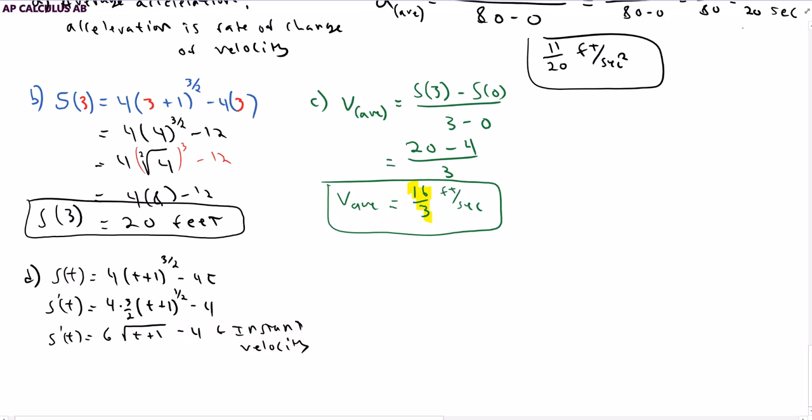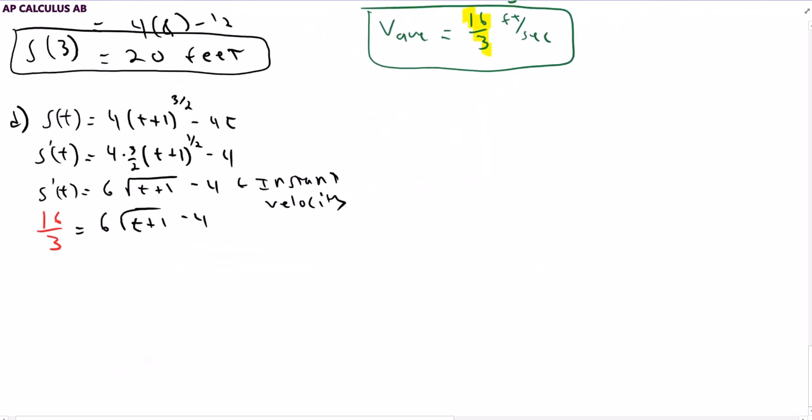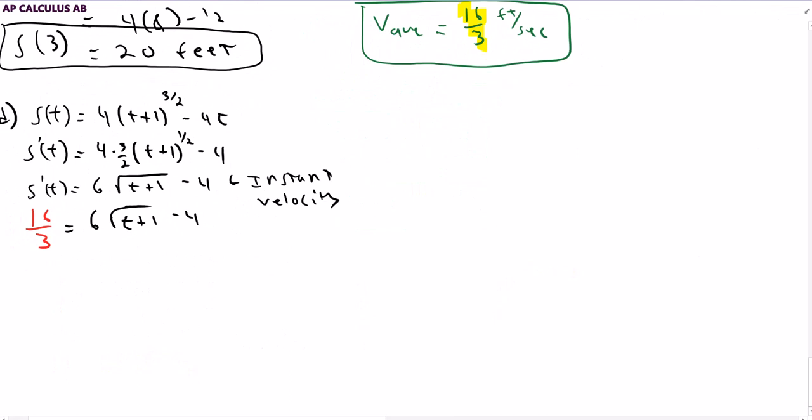And I want to know at what time does the instant velocity equal the average velocity. So I need to take my average velocity 16/3 and figure out at what T value will this equation work. So I add 4 to both sides. This is going to be 4 plus 16/3 equals 6 square root of (T + 1). And then let's simplify this. 4 is the same as 12/3, which is going to give me 28/3.